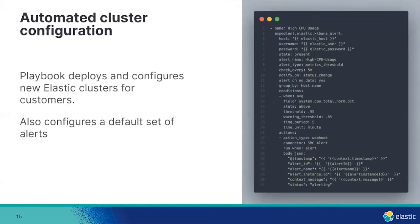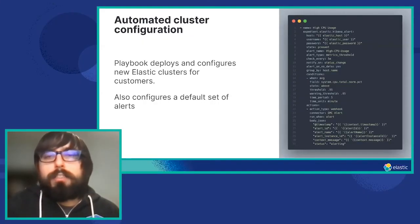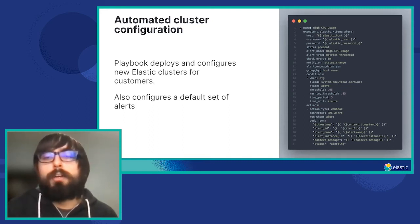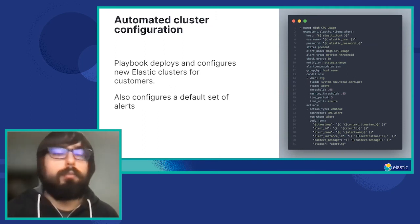Building on that, we developed automated cluster configuration tools. This effectively takes those modules and turns them into playbooks we can use anytime we're deploying a new customer. It creates a new instance inside our Elastic Cloud Enterprise environment and configures a default set of alerts, users, and that sort of thing. You can see on the right an alert playbook we created — it lets you specify all the typical conditions you would have in the UI, but automated. Most interesting is that we can configure actions to send arbitrary webhook data into middleware that then gets ingested into our ticketing system.